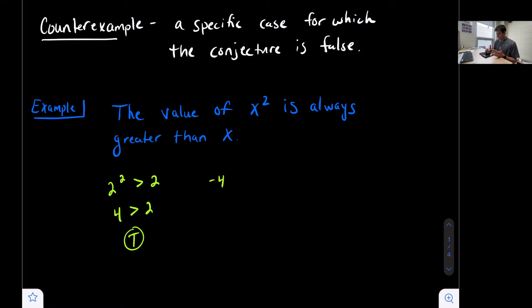Let's choose a negative number. What if we said negative four squared? That would be 16 is greater than negative four, and that is also true. So it seems to be working for positives. It seems to be working for negatives.